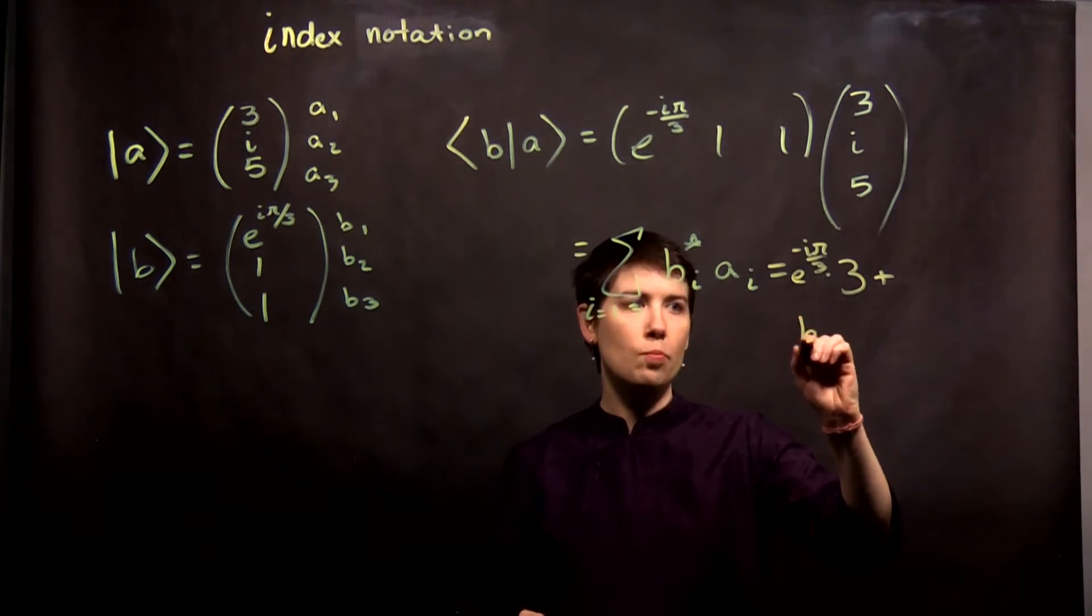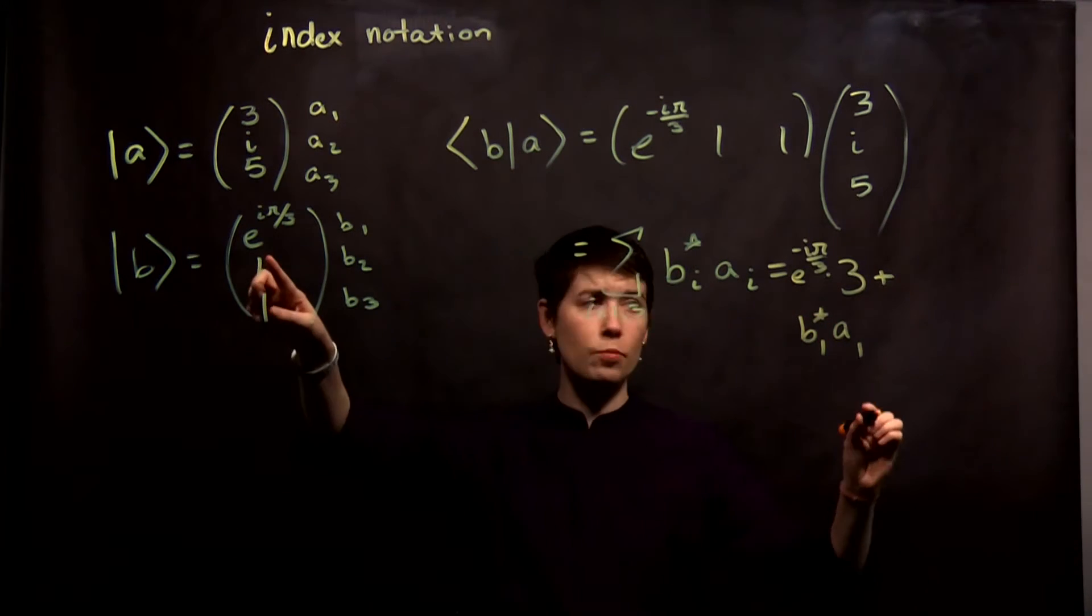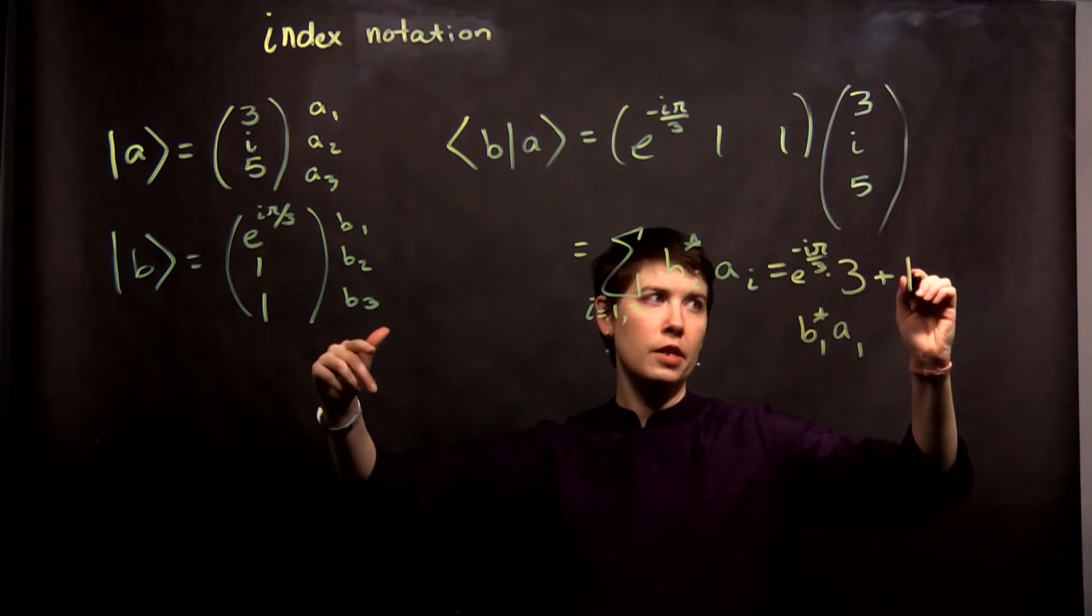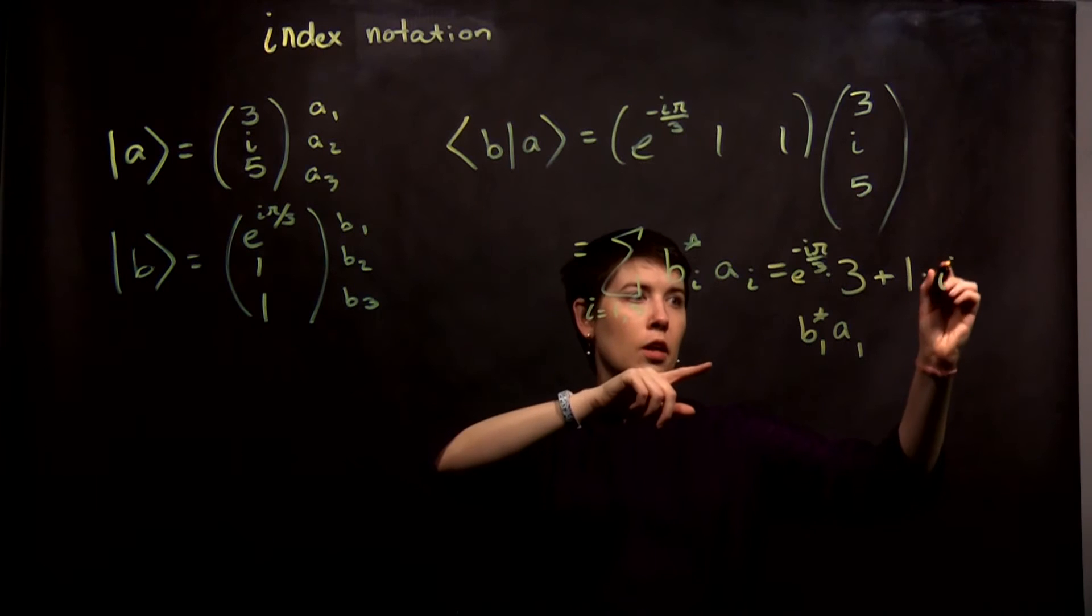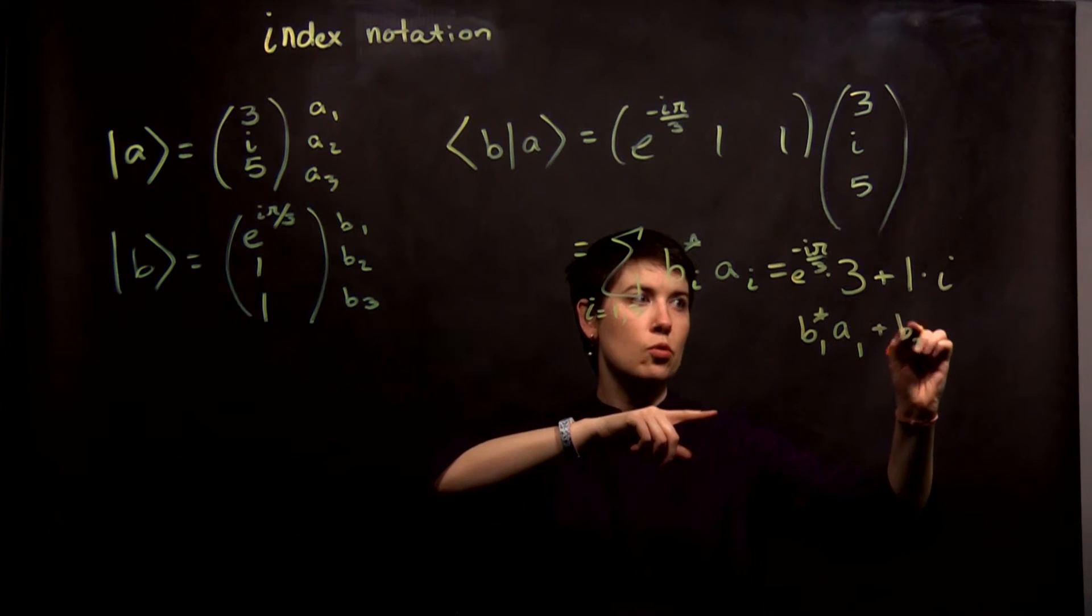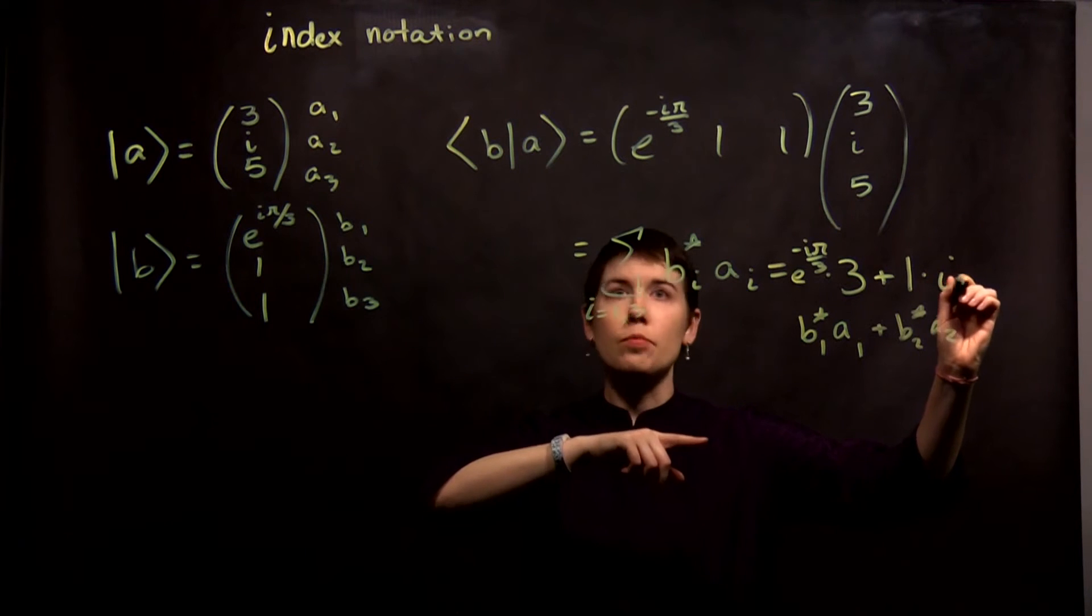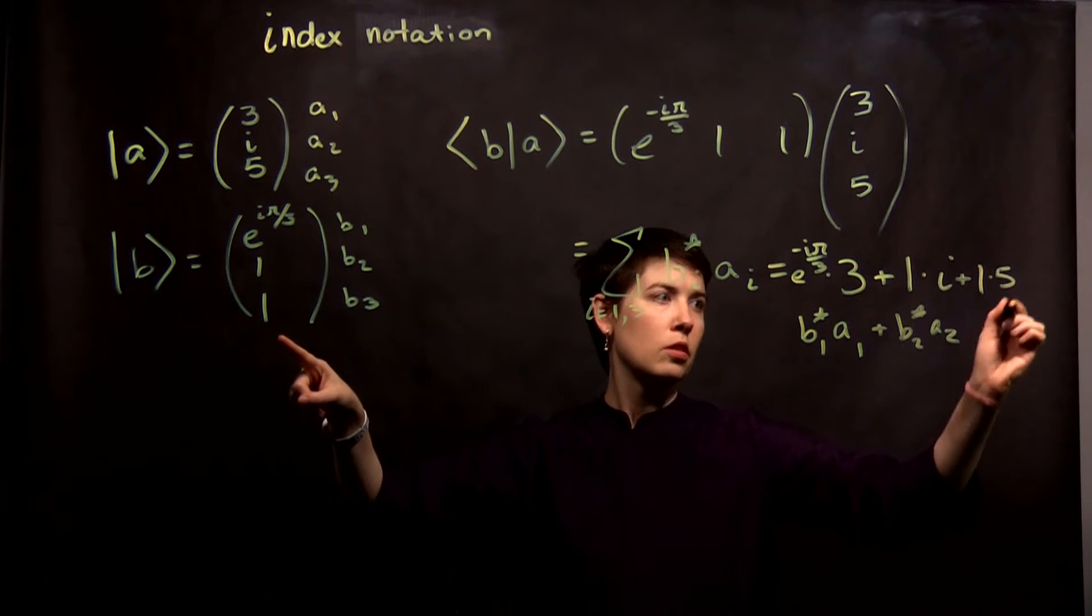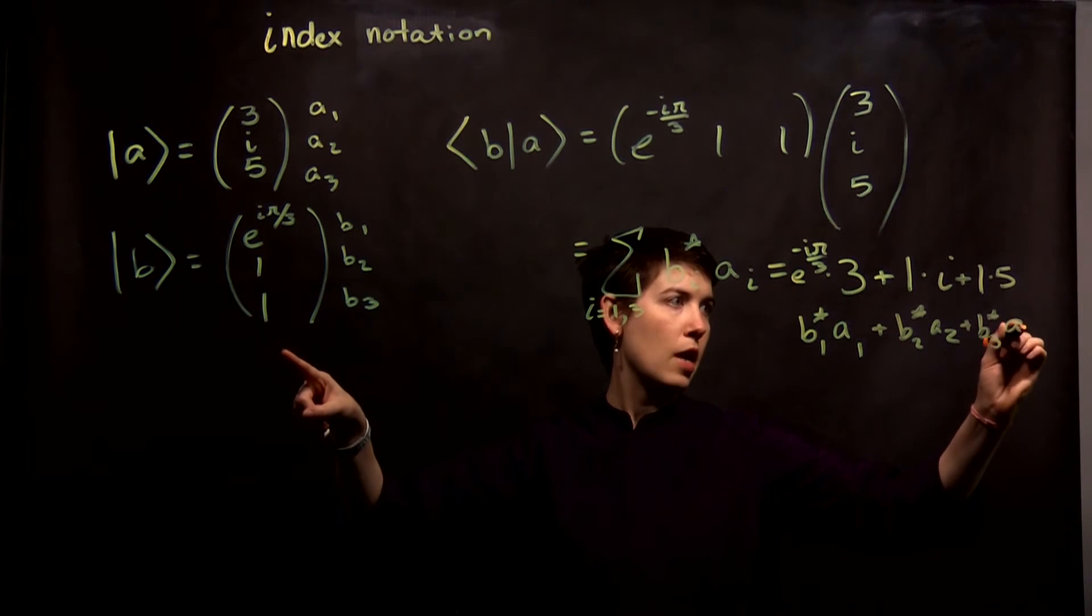So this here represents b1 star a1. The next term would be the second one. 1 complex conjugated times i. Not complex conjugated. And again, this is going to be now b2 star a2. And then our last term here is 1 times 5. So that represents our b3 star times a3.